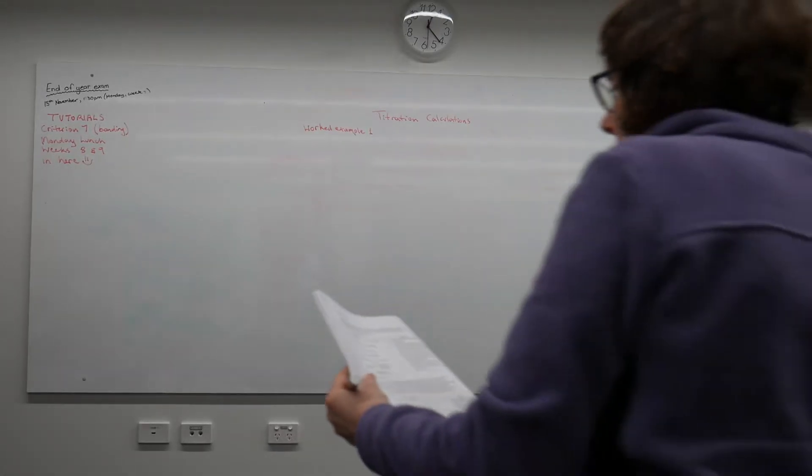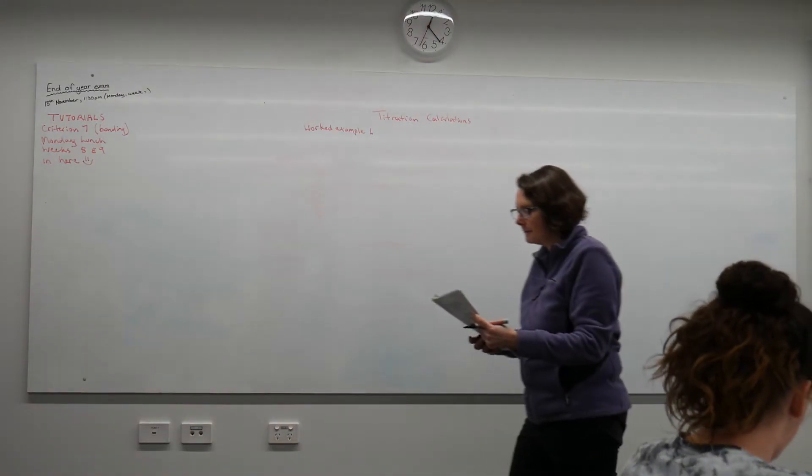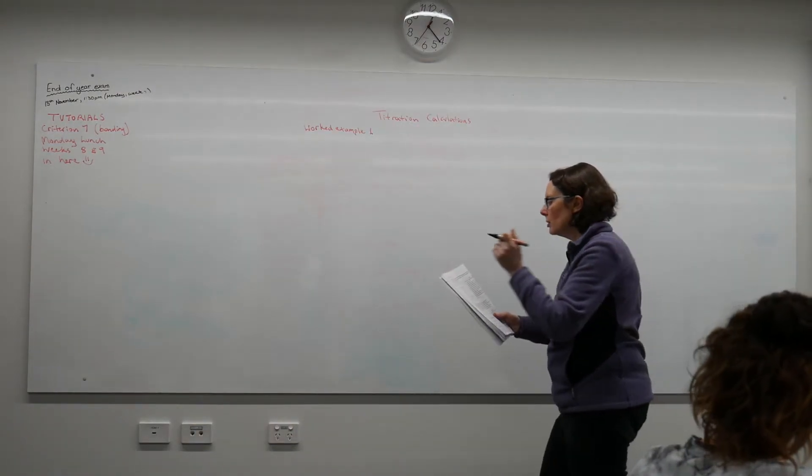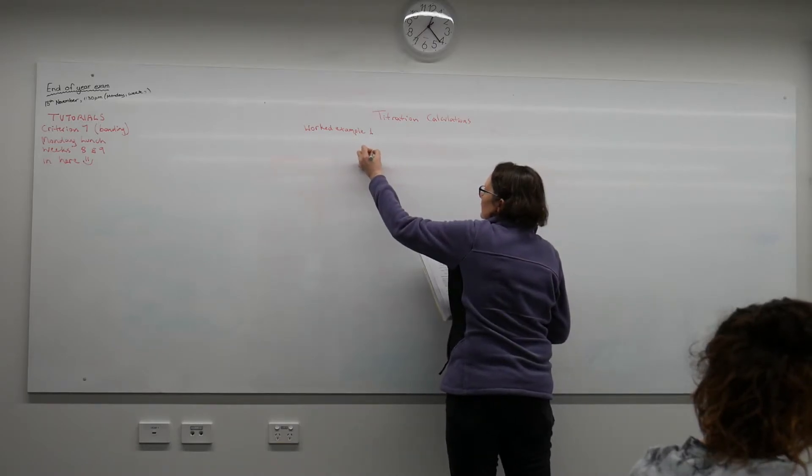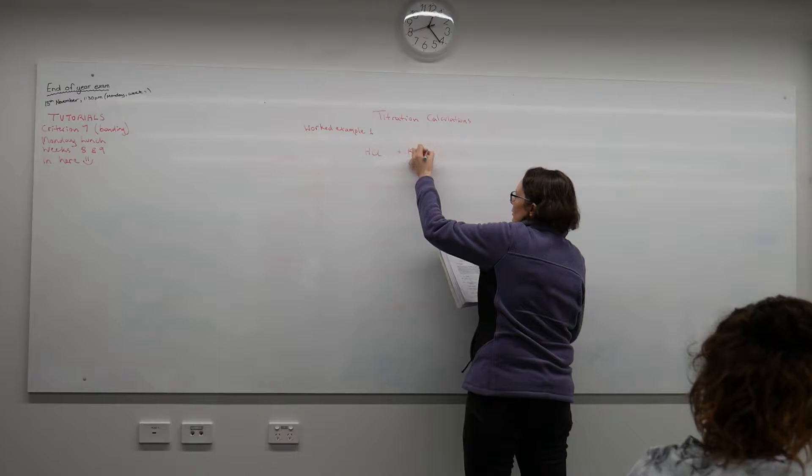Let's look at example 1 on page 66. It tells us it's a titration, and we're titrating hydrochloric acid with potassium hydroxide.